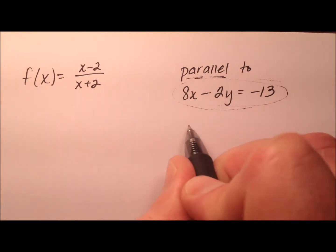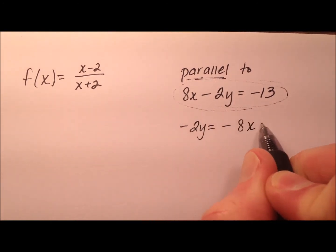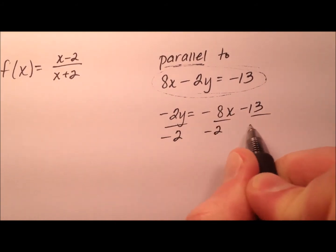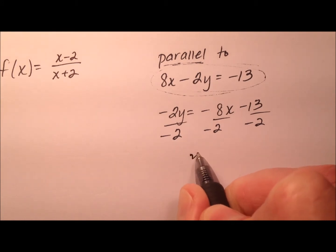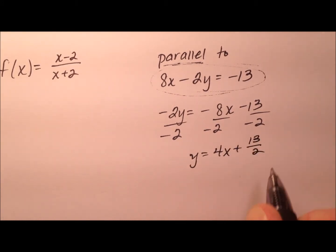So let's subtract 8x from both sides. So negative 2y equals negative 8x minus 13. And when I divide everything by the negative 2, it looks like y equals 4x plus 13 halves.